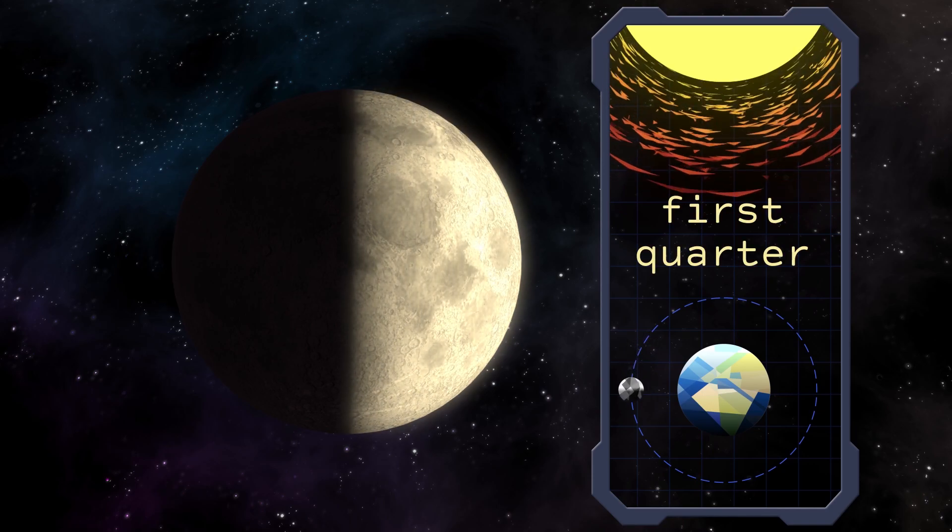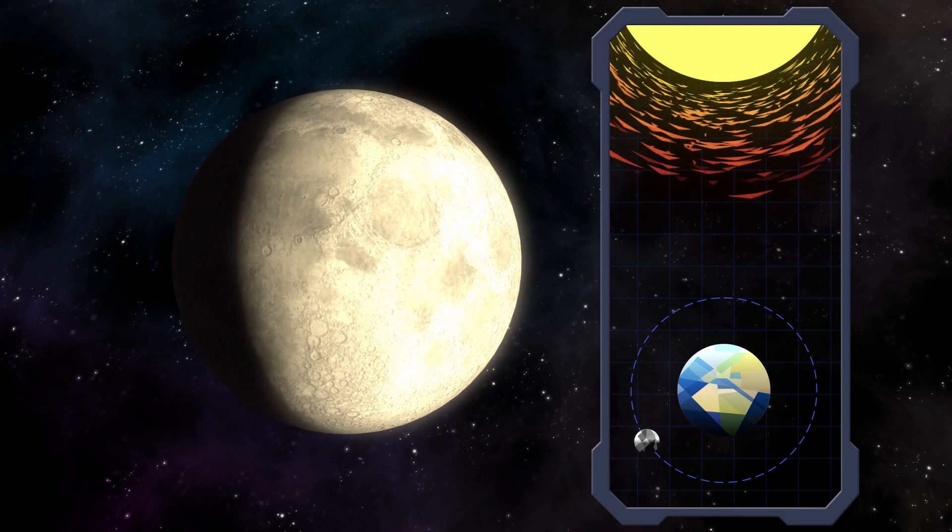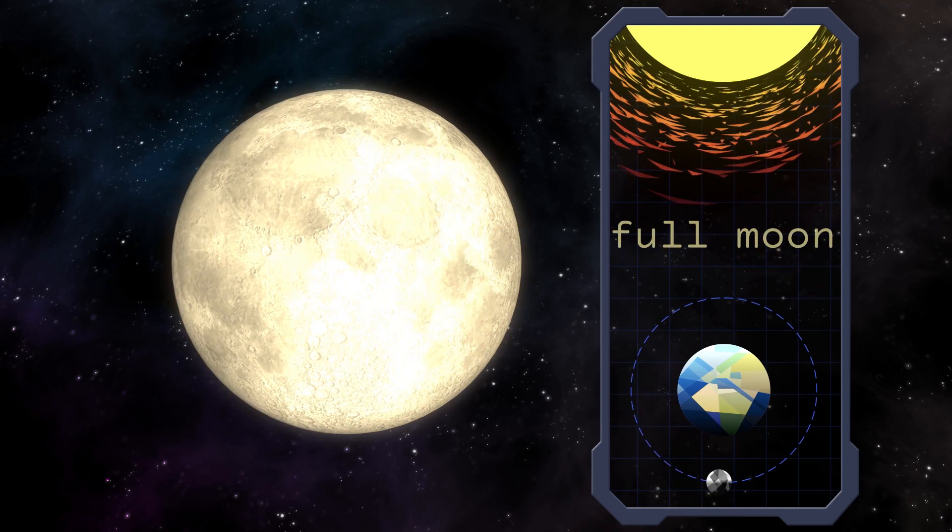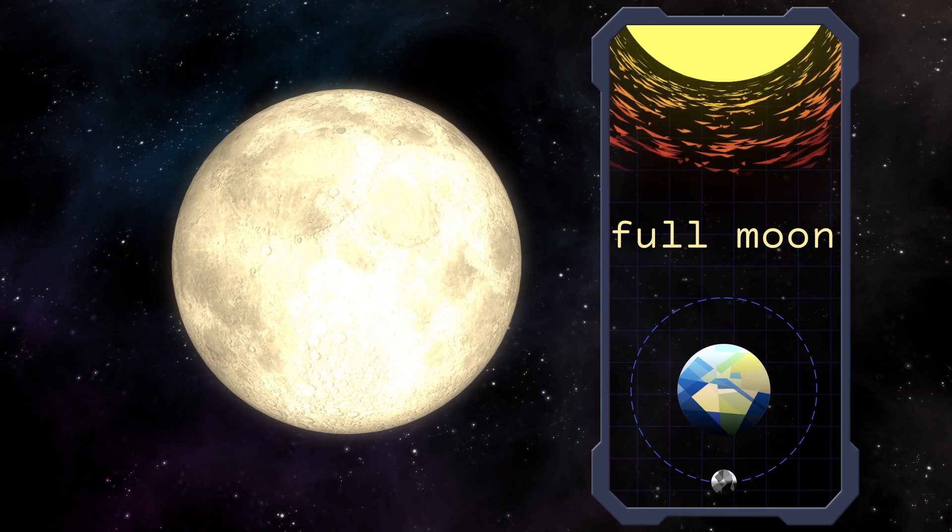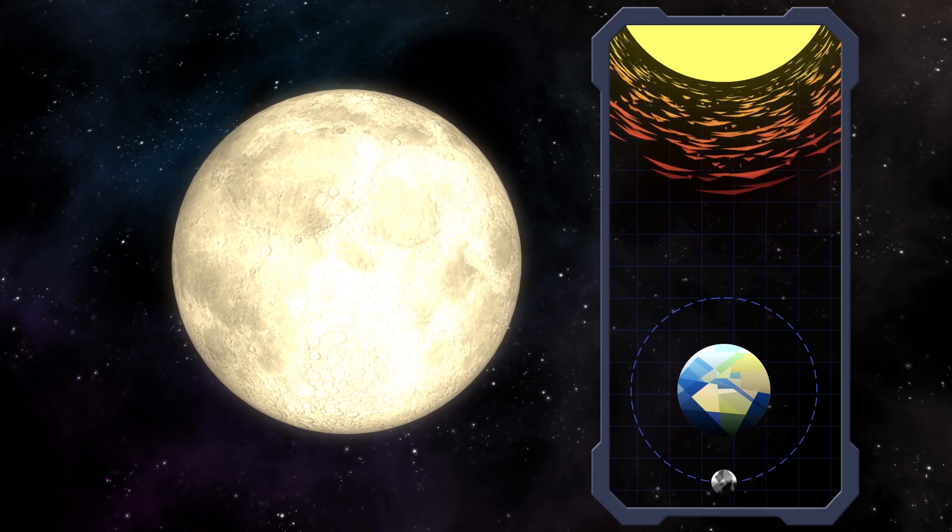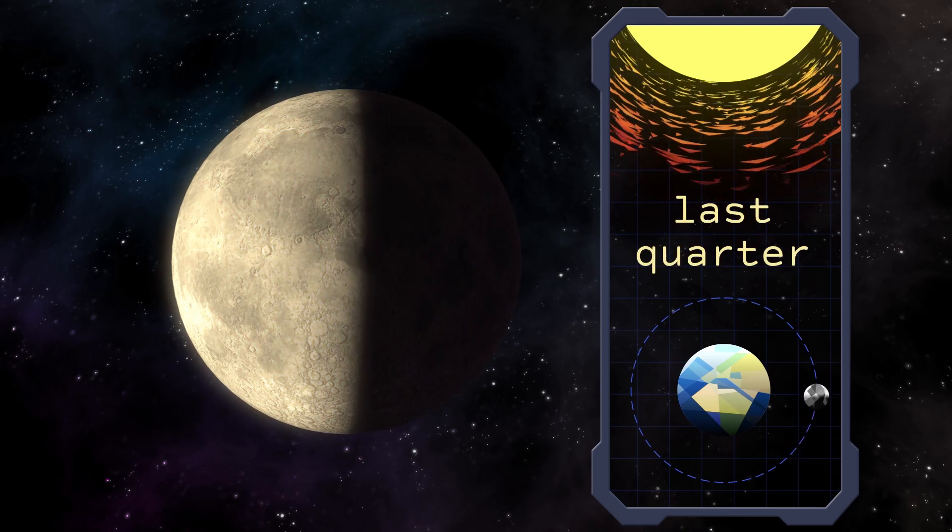Then the sunlit part of the Moon keeps growing until its hemisphere we can see from Earth is completely illuminated. Finally, the same phases follow each other in reverse order.